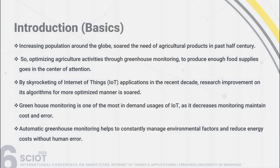Increasing population around the globe has soared the need for agricultural products in the past half century. Optimizing agricultural activities through greenhouse monitoring to produce enough food supply has gone to the center of attention. With the rocketing of Internet of Things applications in recent decades, research improvement on its algorithms for a more optimized manner is sought. Greenhouse monitoring is one of the most in-demand usages of IoT.